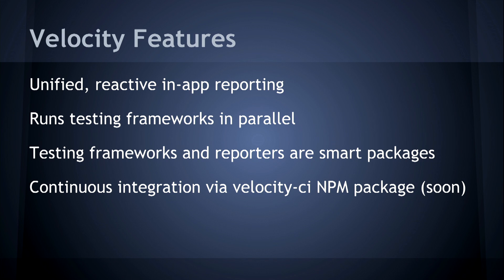The first feature is the unified reactive in-app reporting tool. Velocity runs Jasmine Unit and Mocha Web in parallel — they run all their tests and come back out, so it's very fast, no sequential running. The more frameworks you add, the more they'll run in parallel, and in the future we're hoping to add parallel tests within each framework. These are all smart packages, so they run native to Meteor, know all the Meteor dependencies, and should play nice with your apps. CI is just going to be another reporter.